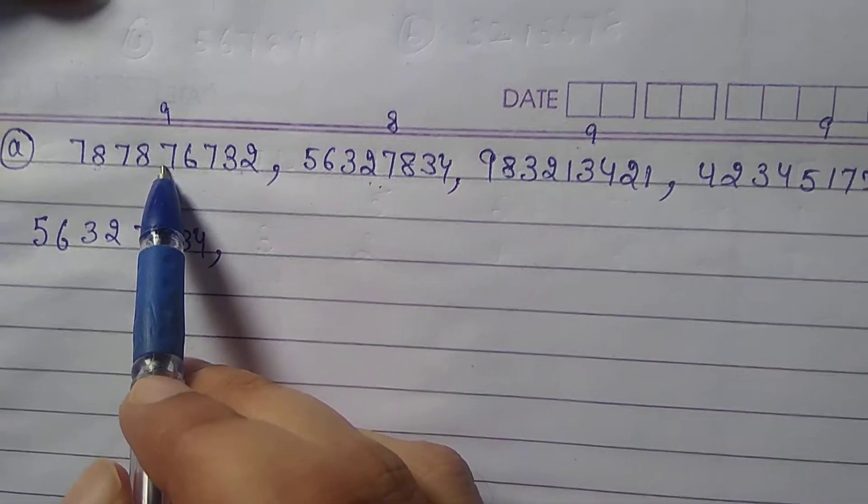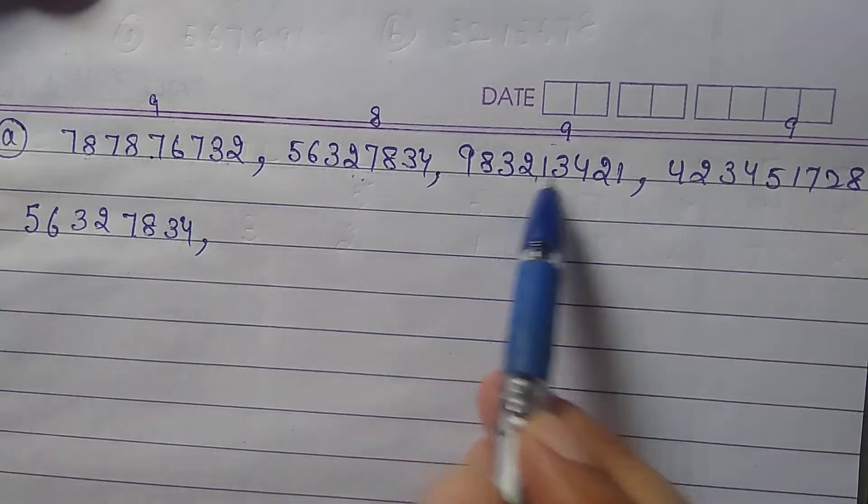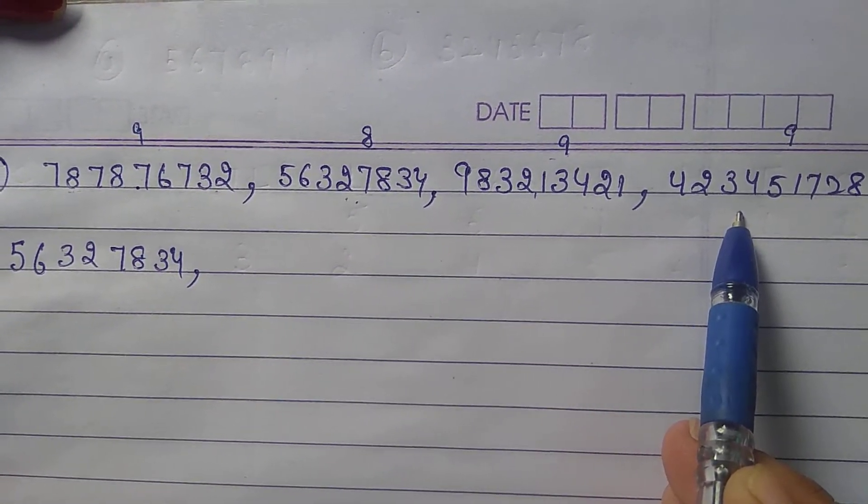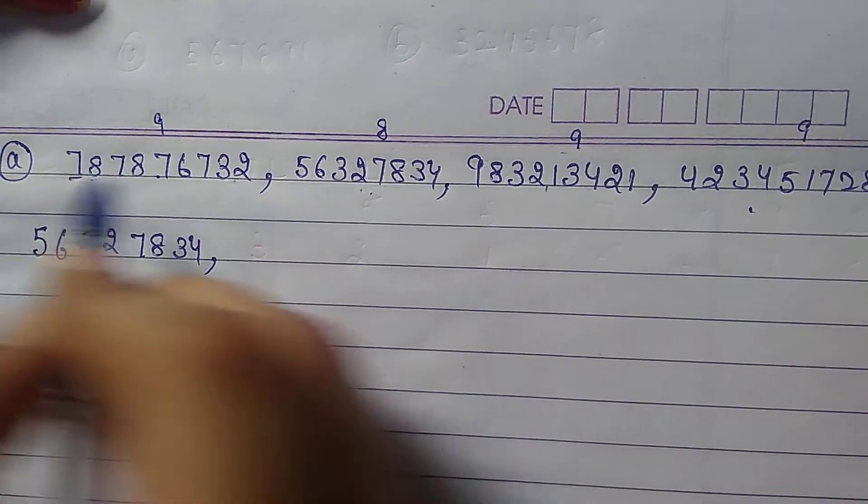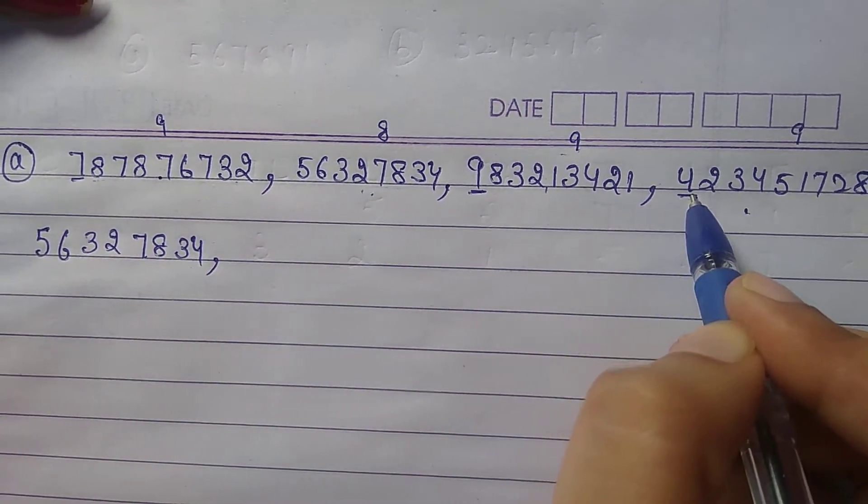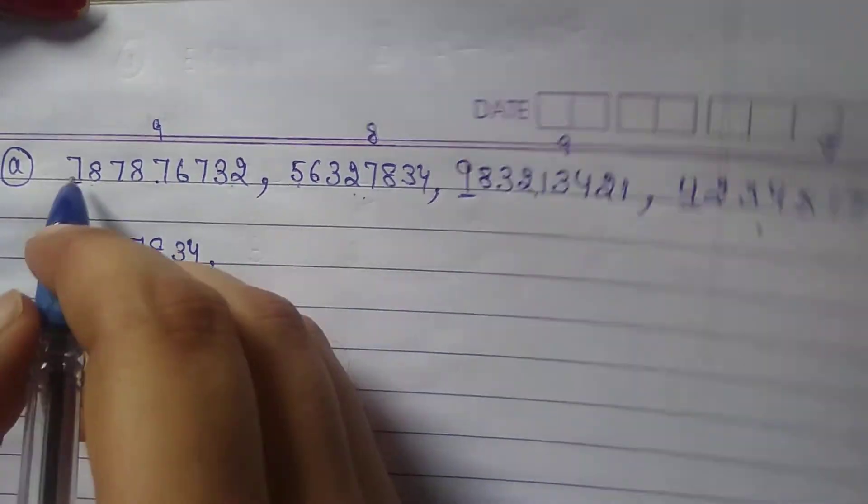The rest of the numerals contain 9 digits. So we will compare the first digit: 7, 9, and 4. So 4 is smaller than 5 and 7.